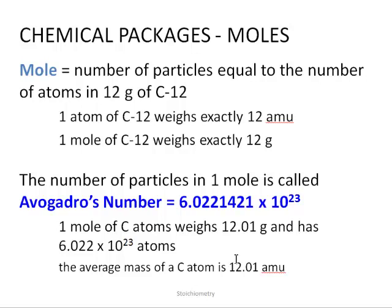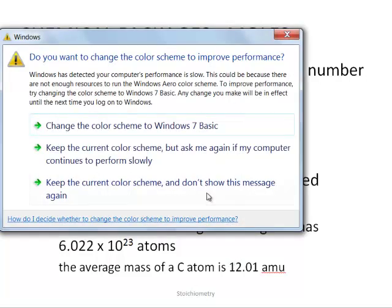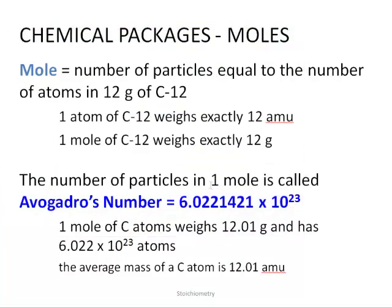And it's based off the carbon-12 isotope. So a carbon-12 isotope weighs exactly 12 AMUs, and we can convert that to a collection term to imply that one mole of carbon-12 weighs exactly 12 grams. And of course, grams are a lot more useful in a chemistry laboratory.